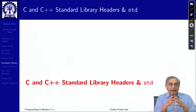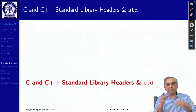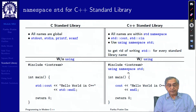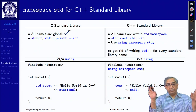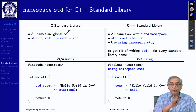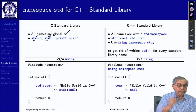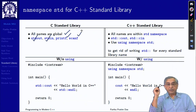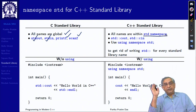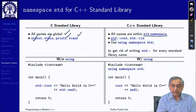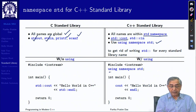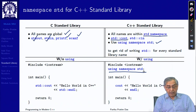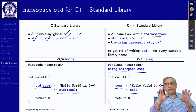Let us look at how the C standard library works in C++. The C standard library has all names in the global namespace — all functions are global, including symbols like stdout and stdin. The C++ standard library has all names within the std namespace, so cout is std::cout. Using 'using namespace std' means you write less — without it you write more with the std:: prefix. This is purely a syntactic difference.